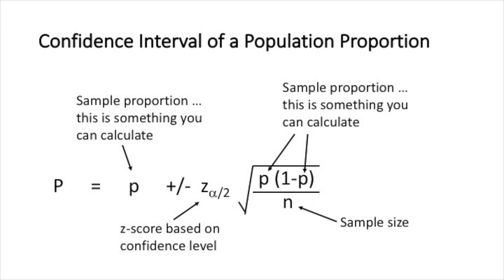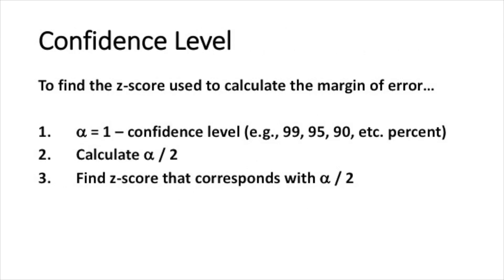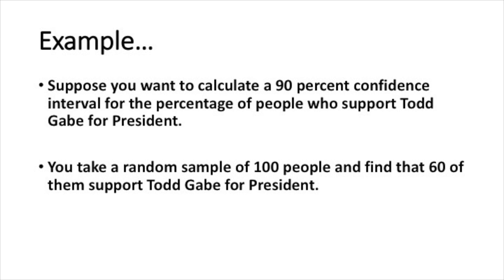The first part of the margin of error is a z-score that corresponds with the confidence level that we set. There are three steps to finding that z-score. The first step is to decide on the confidence level — again we can do 99, 95, or 90 percent. Then we take one minus that confidence level, which equals alpha. Then we calculate alpha divided by 2. Finally, we find the z-score that corresponds with alpha divided by 2 by going to our standard normal distribution table. Let's do an example.